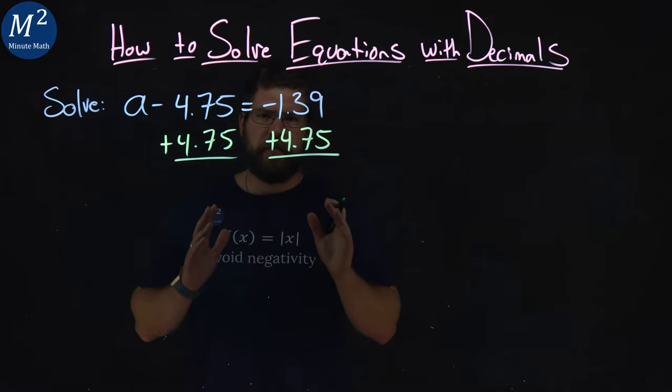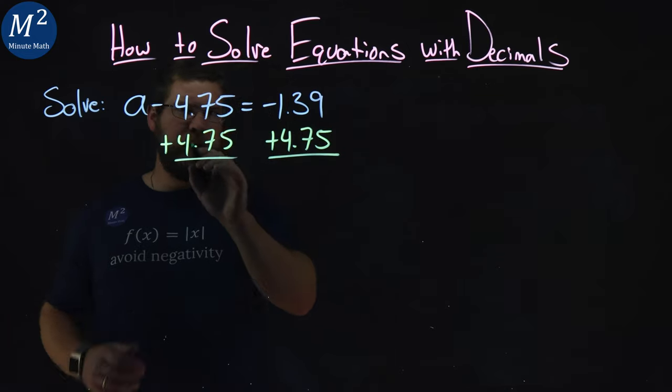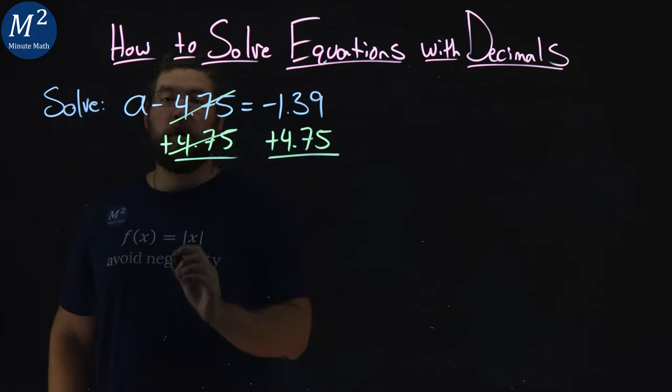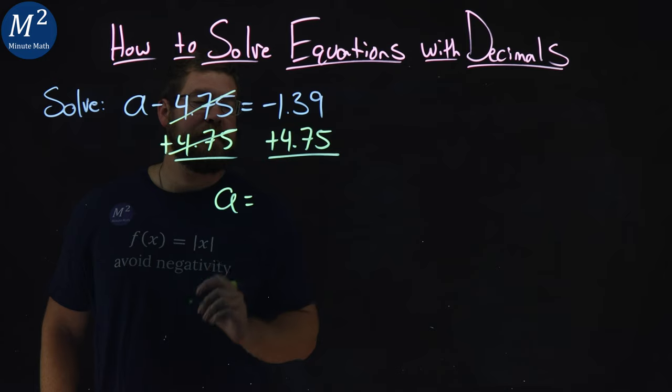Now, this becomes a little difficult in a second. First, we have the negative 4.75 and 4.75, they cancel, we're good. A is all by itself here.